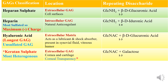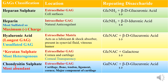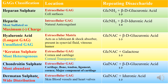Keratan sulfate plays a role in corneal transparency — and it's easy to remember because 'keratan' and 'cornea' both share the 'ker' sound. Chondroitin sulfate, as the name suggests, is an extracellular GAG found chiefly in cartilage, but also in bone, tendon, ligament, and cornea — it is the major cartilage GAG. Dermatan sulfate has wide distribution; 'dermatan' means skin, and apart from skin it is found in blood vessels and heart valves.